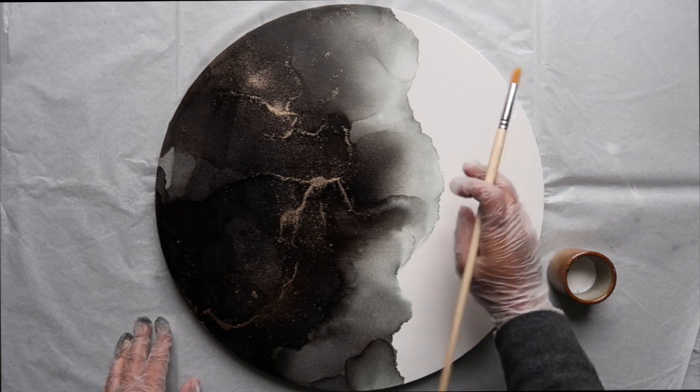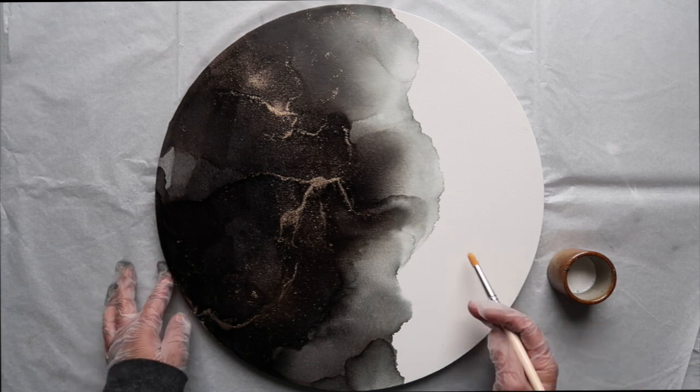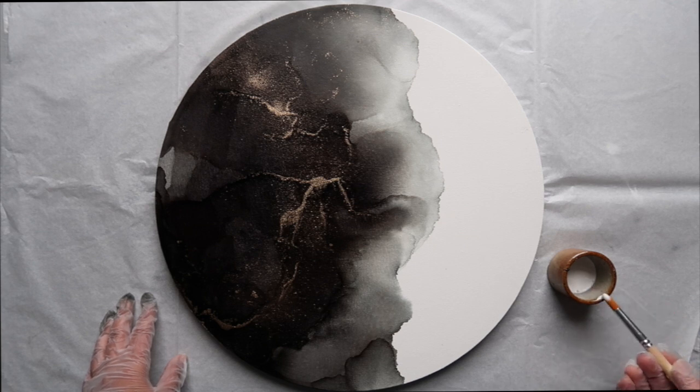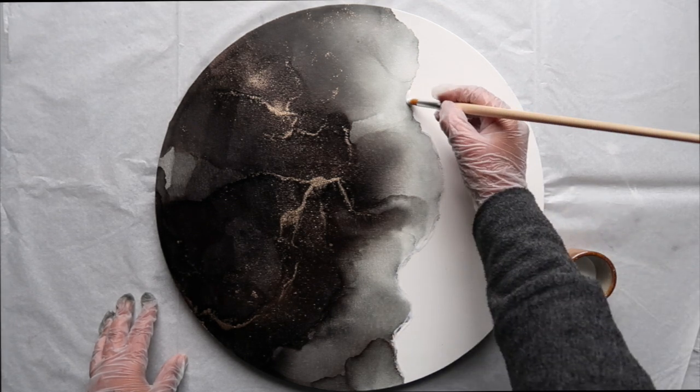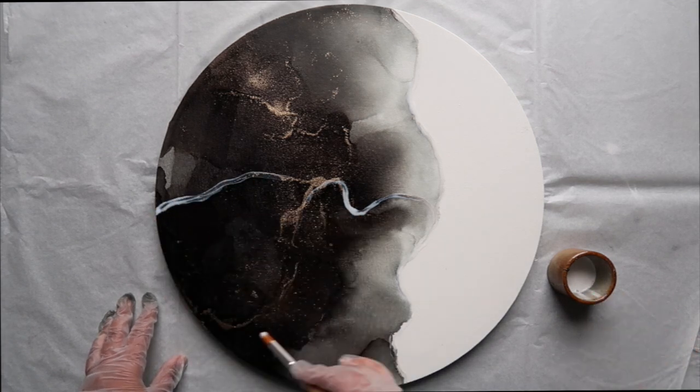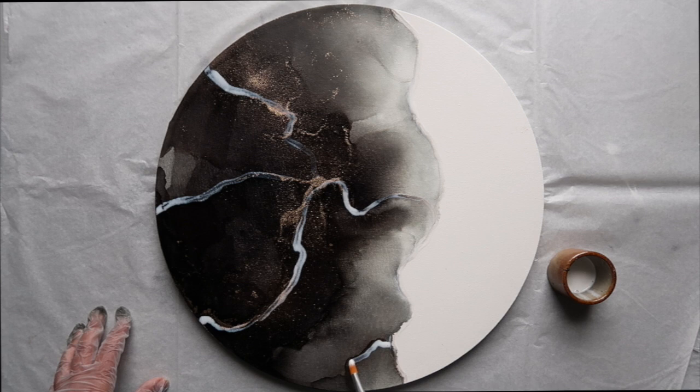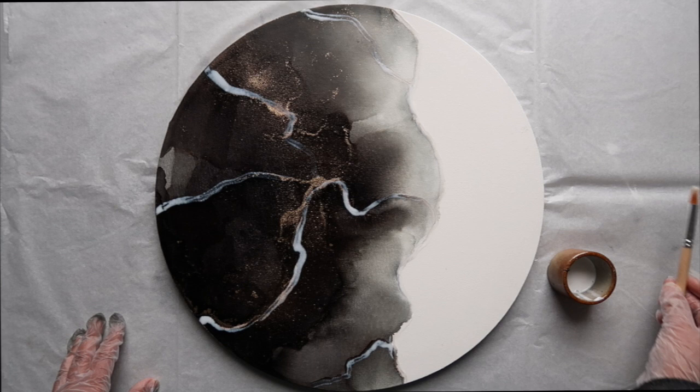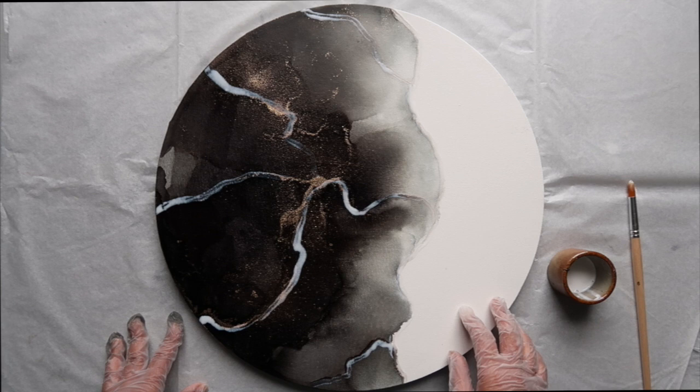So I'm going to grab my gold leaf size and I'm just going to grab a small paint brush and go around the edges of the alcohol ink where the paint meets, where my canvas meets the ink. And I'm just going to go around it. So I also want it to go around where the gold is and just intensify those lines that were originally created by the ink. And you're just going to let that dry until it becomes clear.